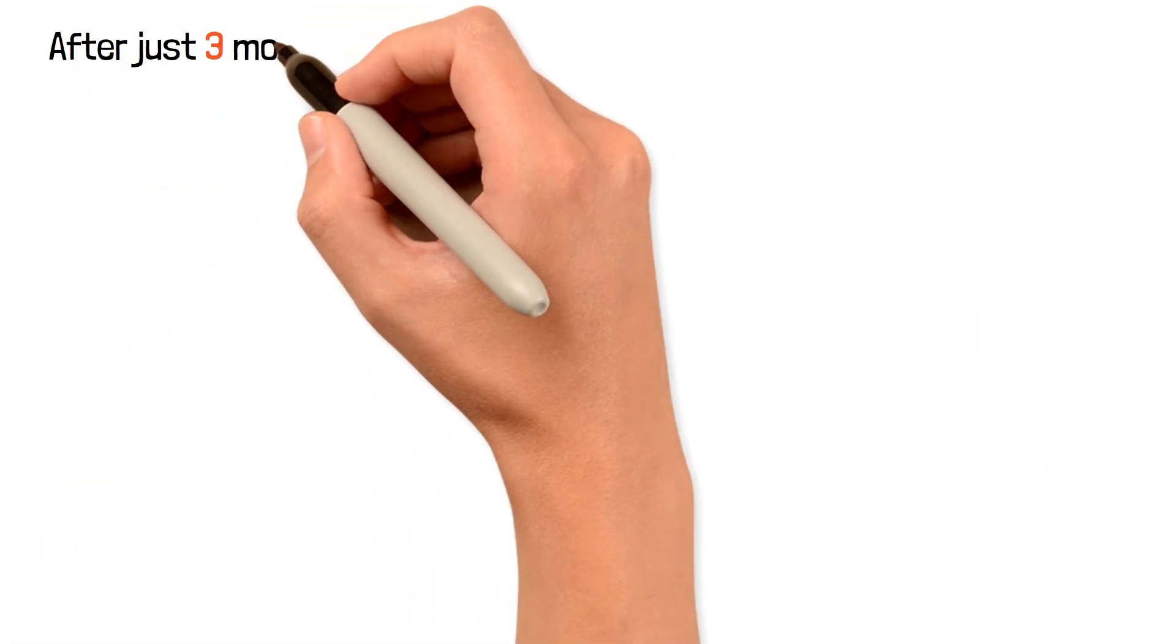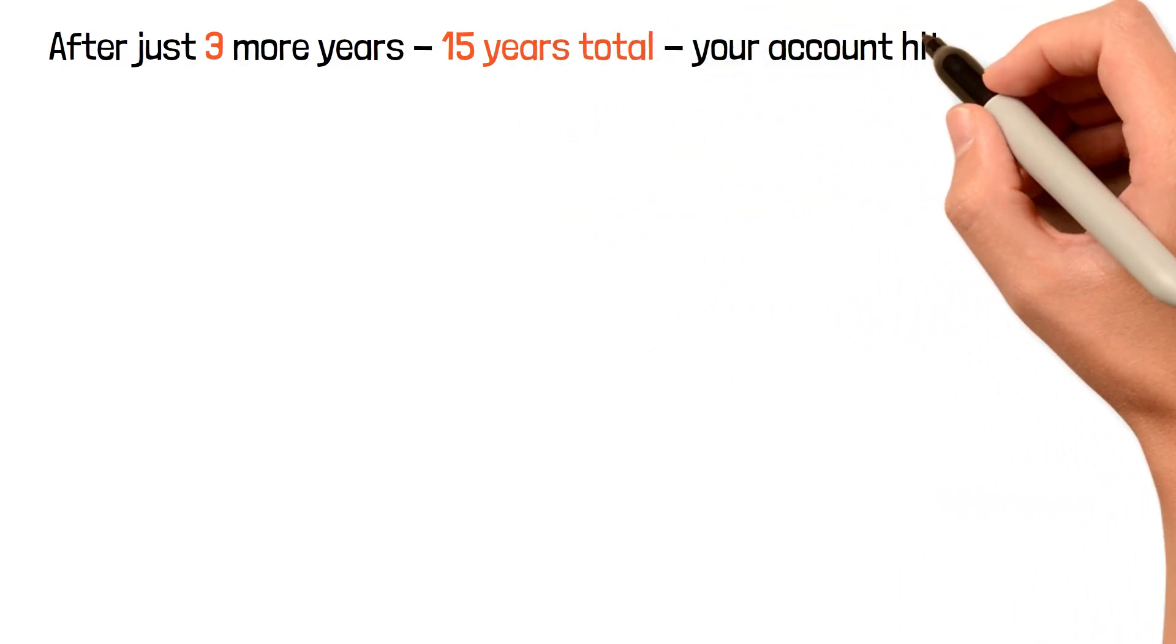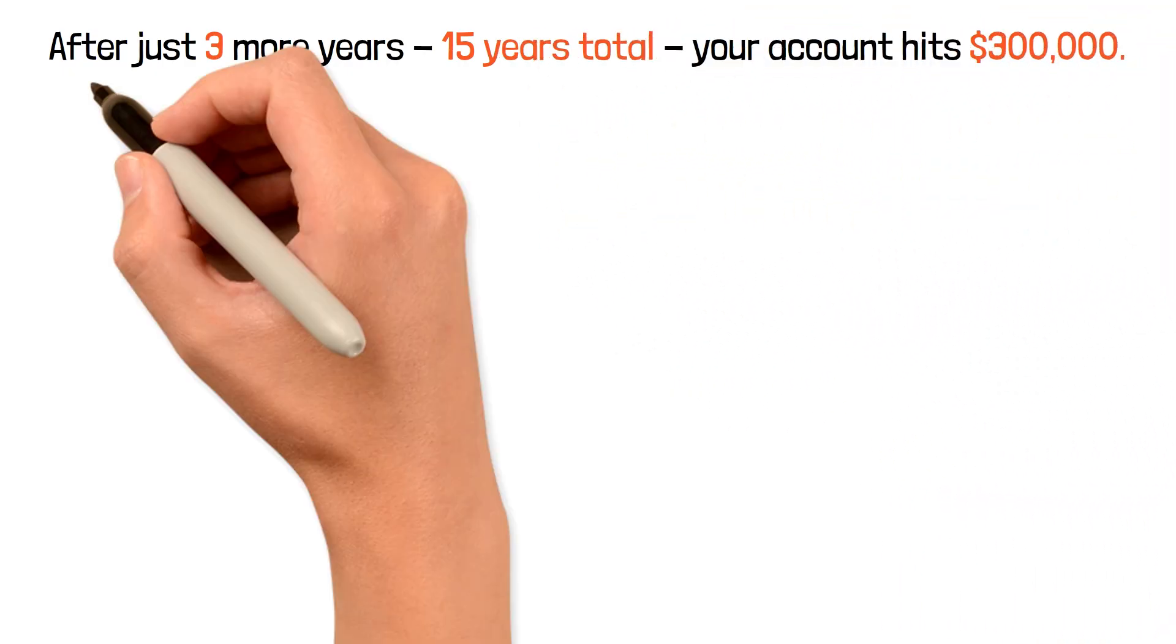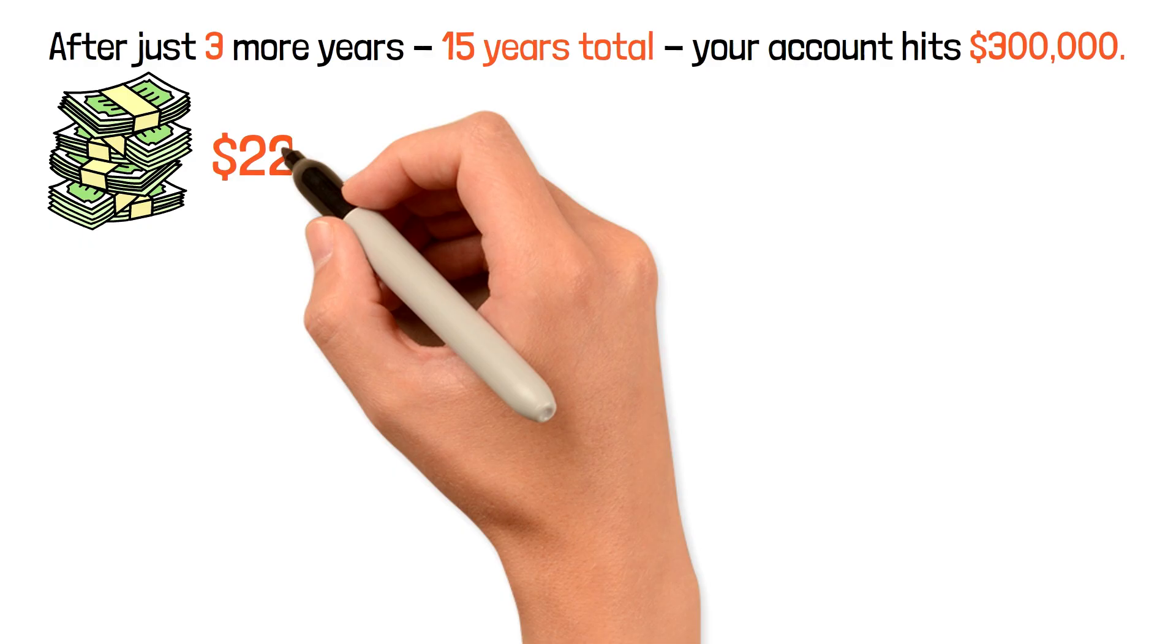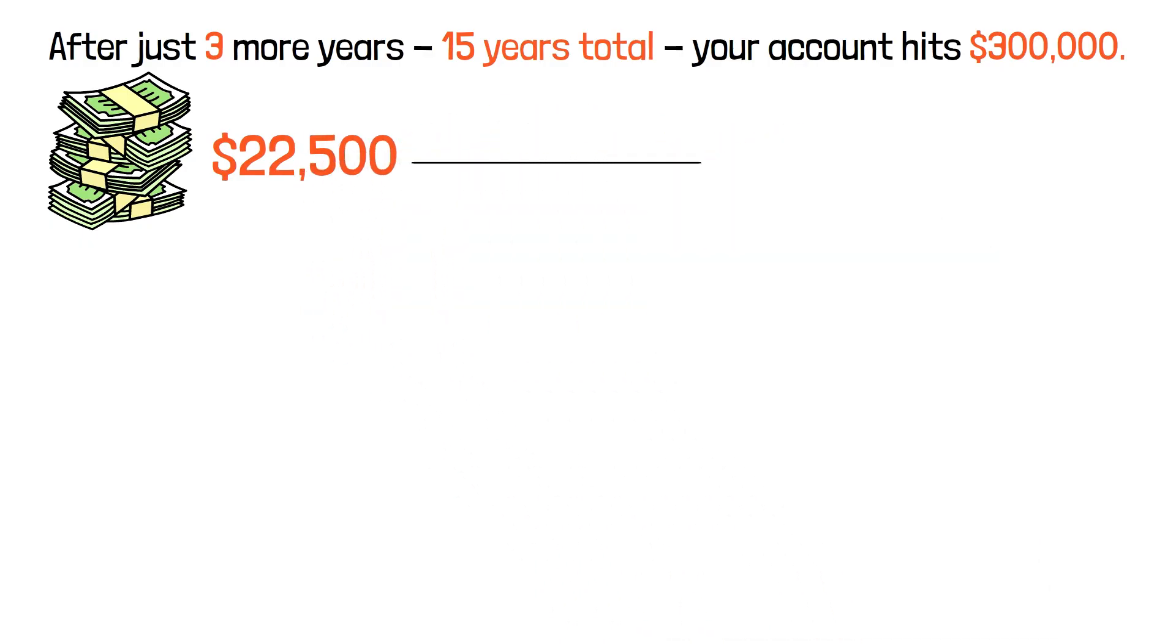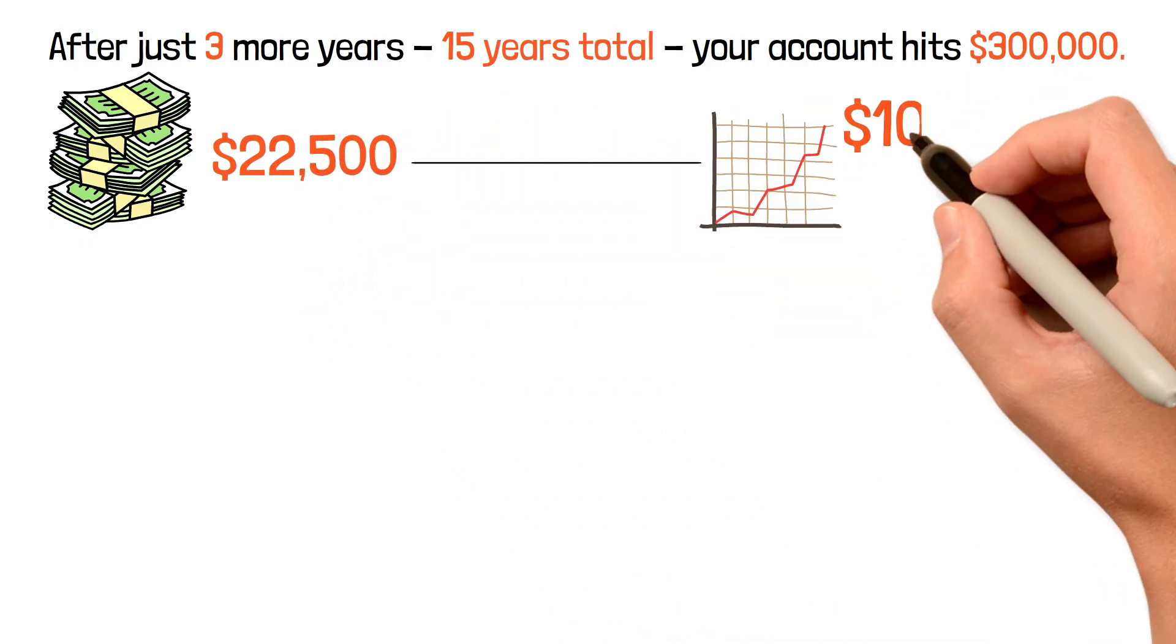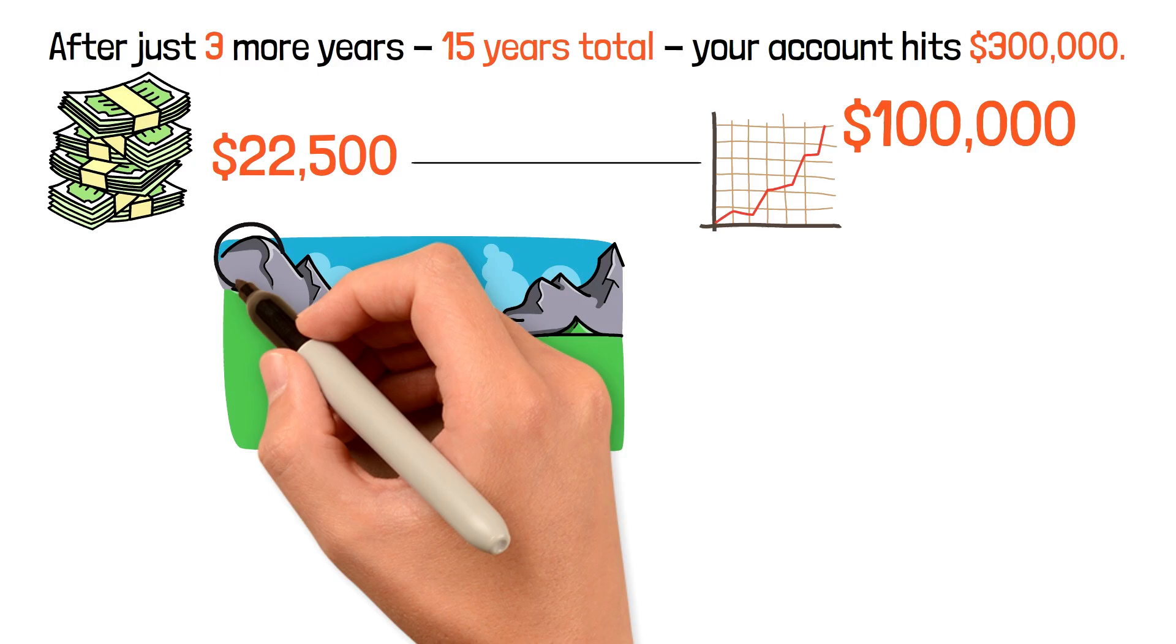After just 3 more years, 15 years total, your account hits $300,000. You contributed another $22,500, but your account grew by $100,000 again. The snowball is rolling faster now.